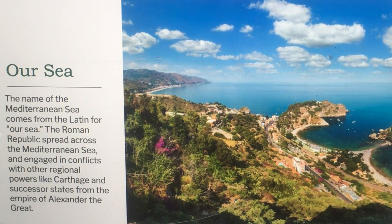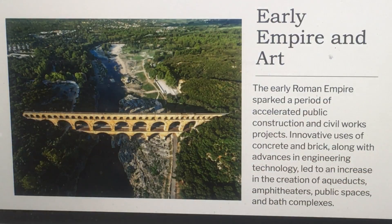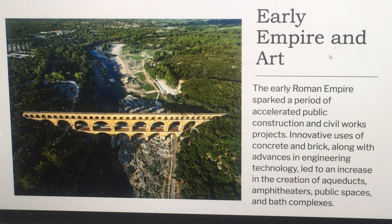The name of the Mediterranean Sea comes from the Latin for 'our sea.' The Roman Republic spread across the Mediterranean and engaged in conflicts with powers like Carthage and the successor states of Alexander the Great's empire. The early Roman Empire sparked a period of accelerated public construction, with innovative uses of concrete and brick and advances in engineering technology leading to the creation of aqueducts, amphitheaters, public spaces, and bath complexes.